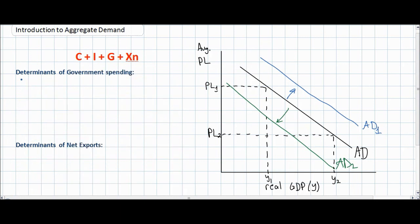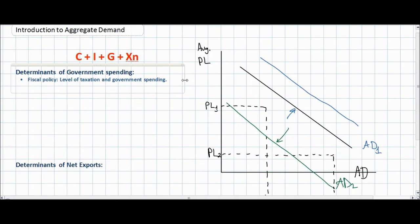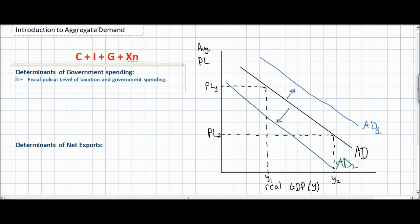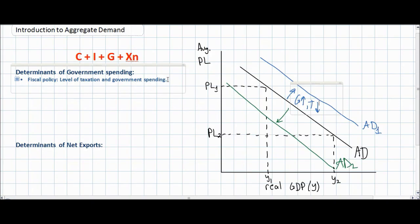Next, let's consider government spending and the factors that lead to an increase or decrease in aggregate demand. Government spending is determined by a government's fiscal policy, which refers to the level of taxing and government spending. Anything that increases government spending will shift aggregate demand to the right; anything that decreases it will shift AD to the left. A fiscal policy that either lowers taxes or increases government spending will shift AD to the right, because households' and businesses' disposable income will rise, increasing consumption and investment.